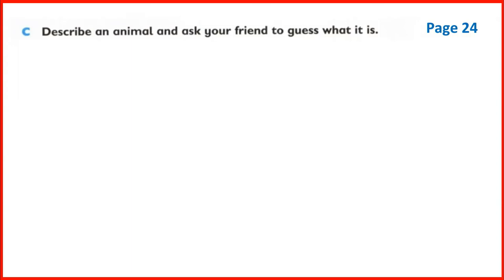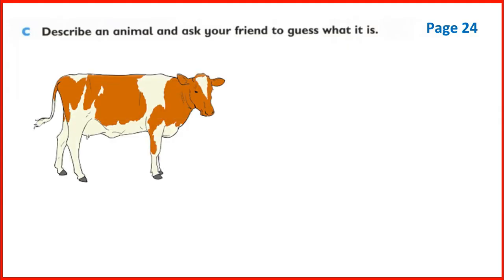Now Section C: describe an animal and ask your friend to guess what it is. I am going to describe an animal and you have to tell me what it is. It has four legs. It gives us milk and meat. It eats grass. We sacrifice it in Eid ul Adha. And it is bigger than a goat. Yes, you are right - this is a cow. We sacrifice cows in Eid ul Adha.